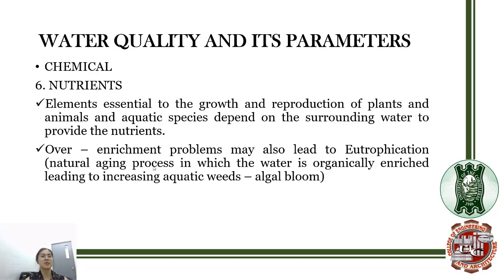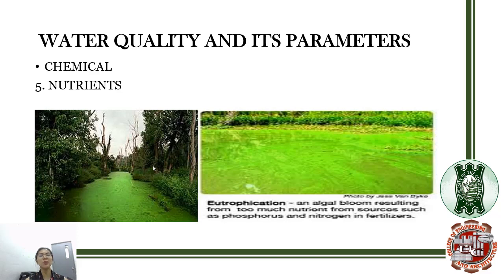Another chemical parameter is nutrients. Elements essential to the growth and reproduction of plants, animals, and aquatic species depend on the surrounding water to provide nutrients. However, when nutrients are in abundance, it may lead to a problem called eutrophication — the natural aging process in which water is organically enriched, leading to increasing aquatic weeds or algal bloom. When the water appears greenish with a lot of algae on the surface, that indicates eutrophication due to excessive nutrients.